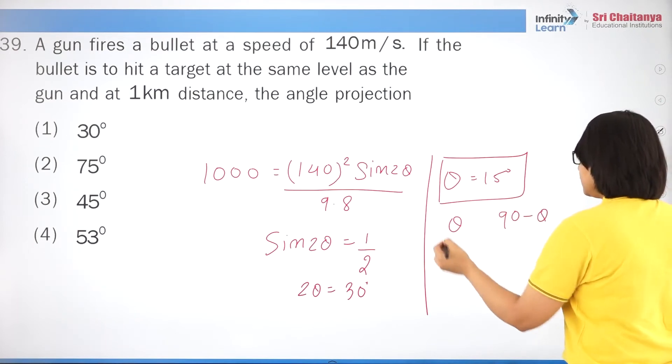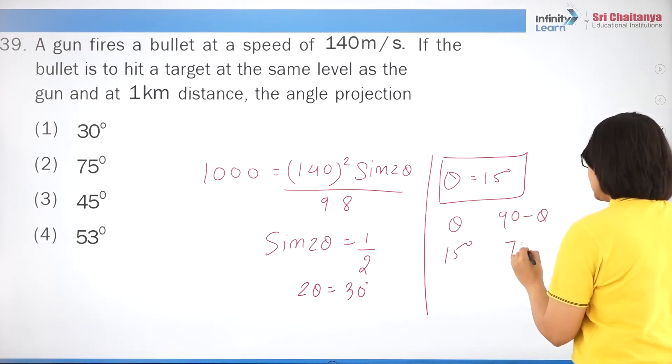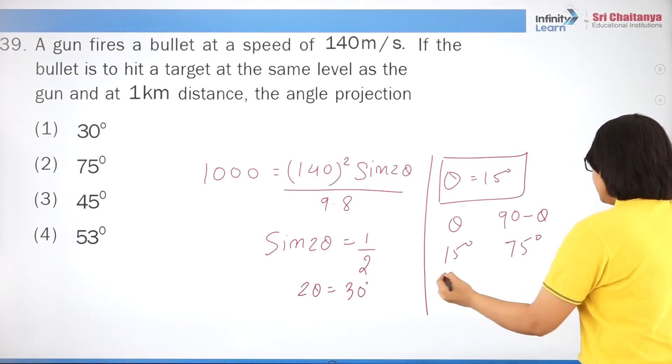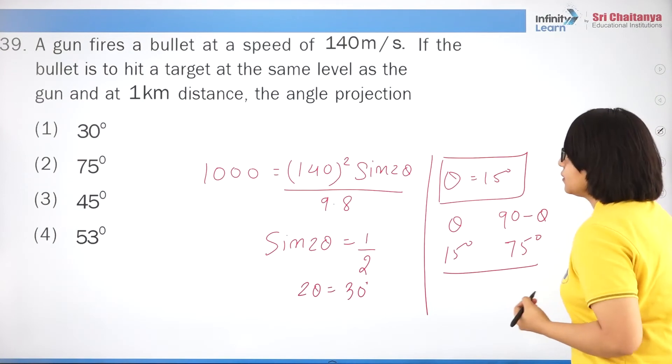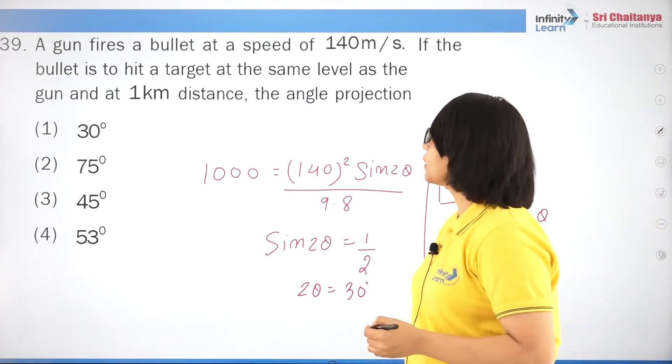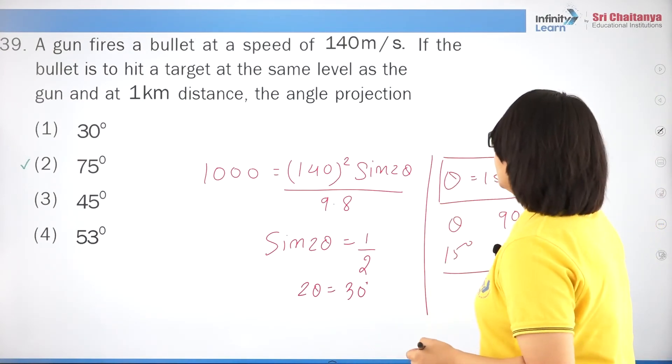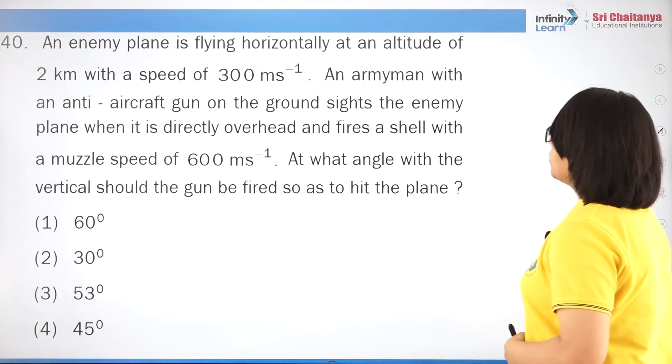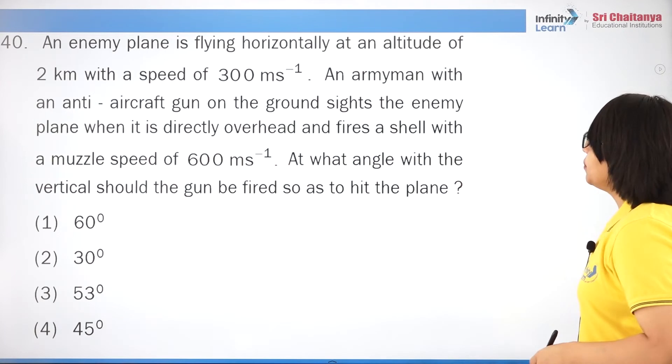Question 6: a particle is projected horizontally from the top of a tower. The trajectory is a parabola, so the correct answer is option 2.